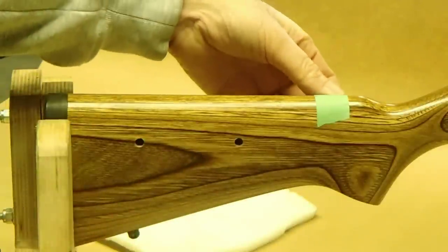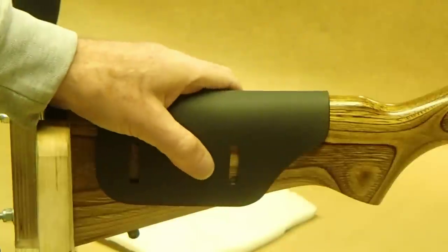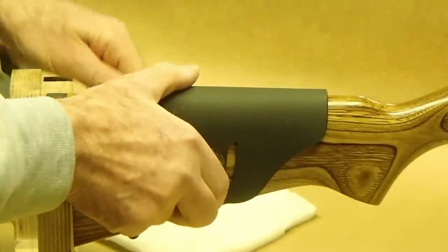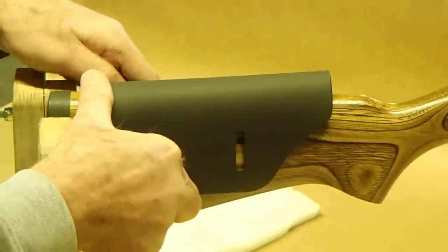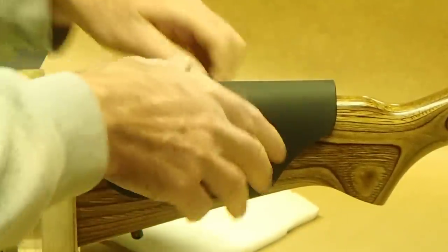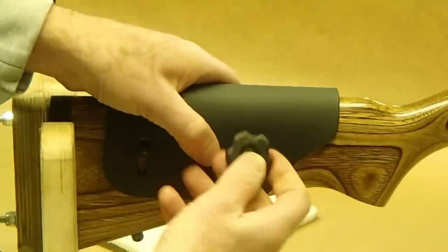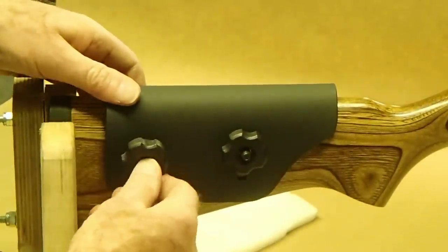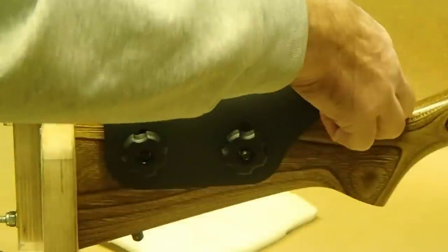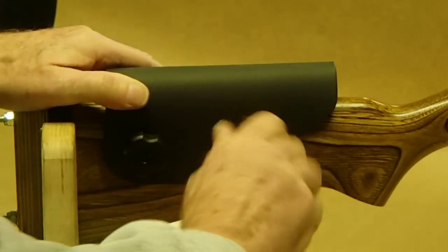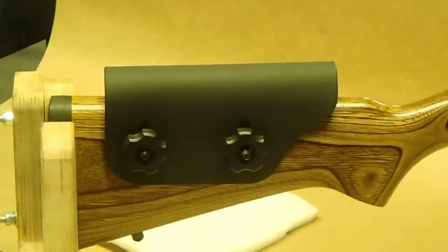Now I'll remove the tape. This stock happens to have a couple of holes already drilled from my previous installation. So I'm just going to lay the cheek rest on the stock and put the bolts through the existing holes. You may have to cut the bolts to the correct size for your stock. We include bolts that are two and a half inches long. When you get to this stage, simply adjust the cheek rest to where you want, lock the knobs, and you're done.